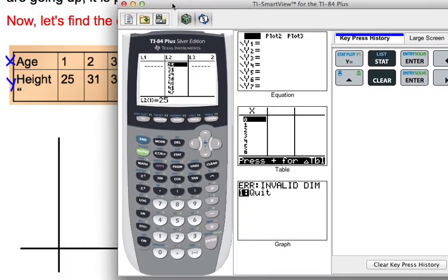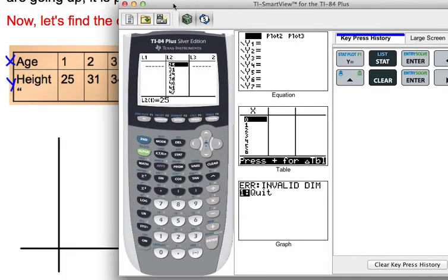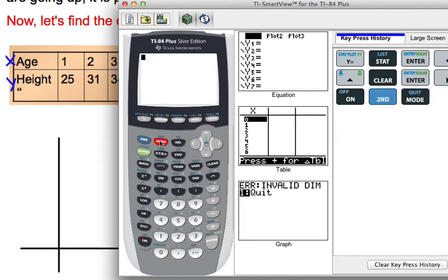We're going to turn your calculator on. Here's your home screen. Remember when I talked about turning the catalog on? I'm going to show you that. You're going to go second, the number zero, and that's the catalog.